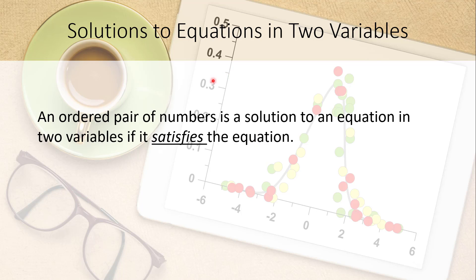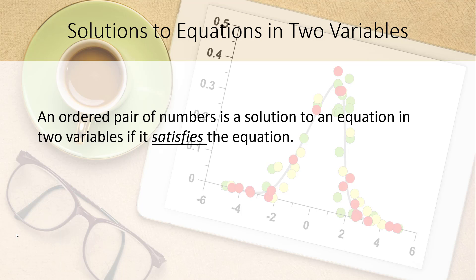A solution to an equation in two variables is going to be an ordered pair — two numbers surrounded by parentheses where the first number is the x-coordinate and the second is the y-coordinate. An ordered pair is a solution if it actually satisfies the equation — in other words, if those two numbers make the equation true.